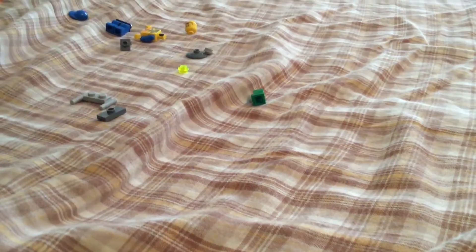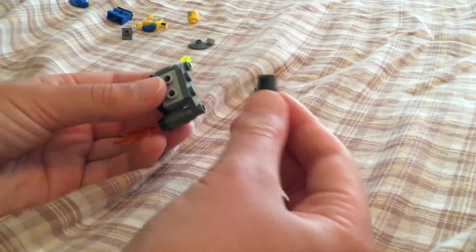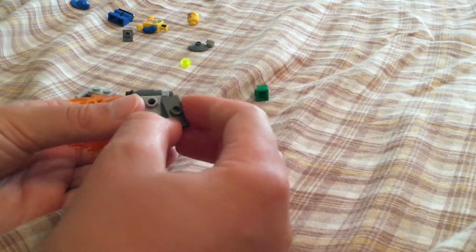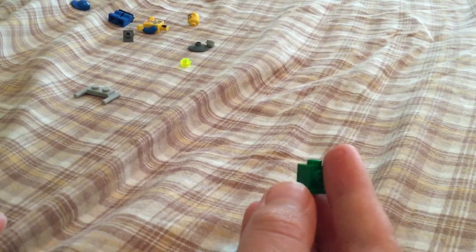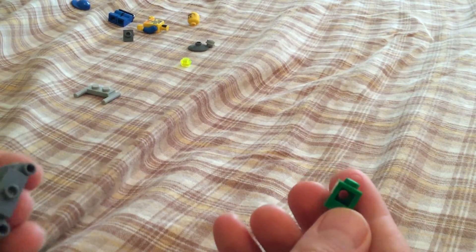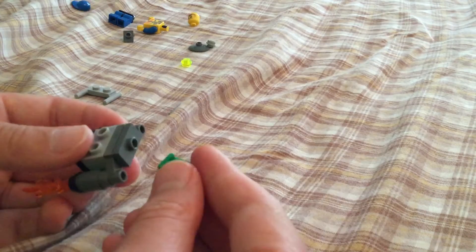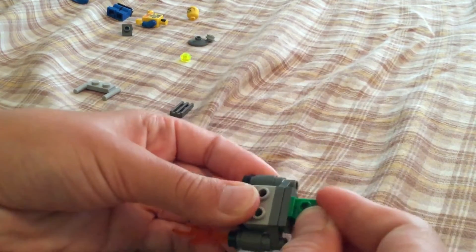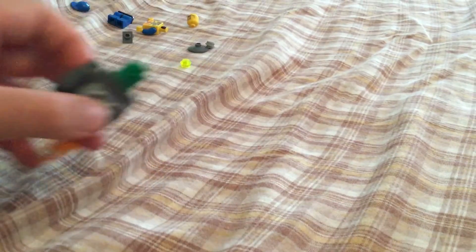Then you can get a 1x2 jumper plate and put it on, and then one of these 1x1s that have a stud that can take a stud, and you're going to put it on like that.